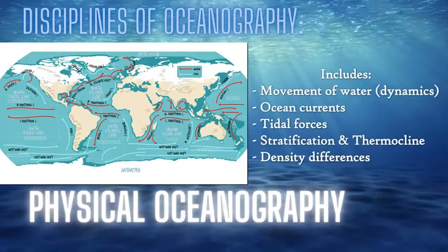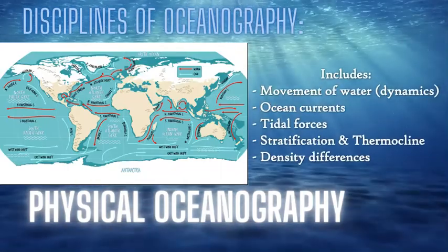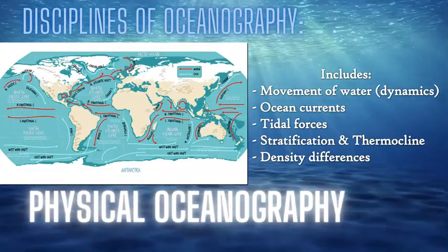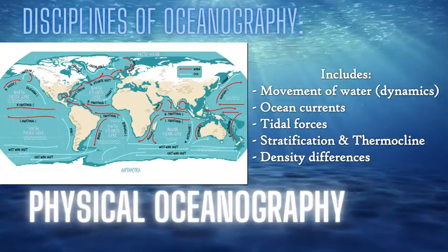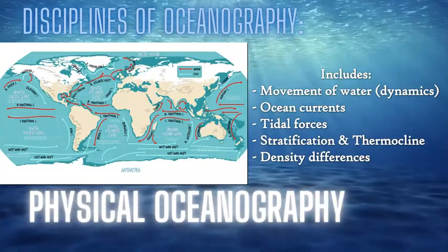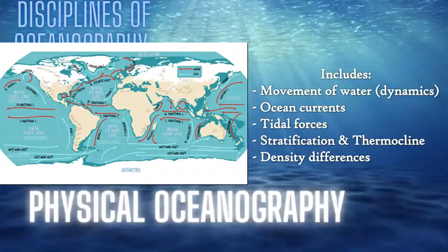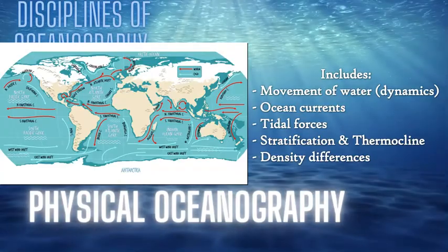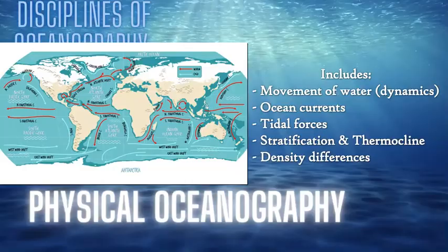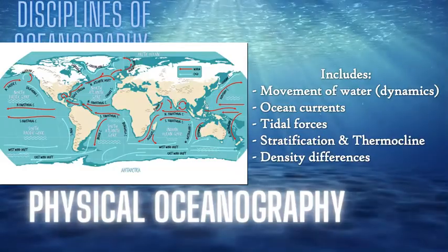Physical oceanography includes looking in more detail at the physics of how the water is going to move and be dynamic — based on tides, based on density, based on ocean currents, and wave movements and tidal forces. So it looks at geophysical cycles within the oceans themselves.